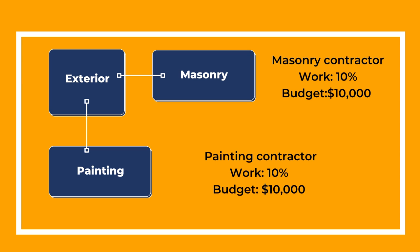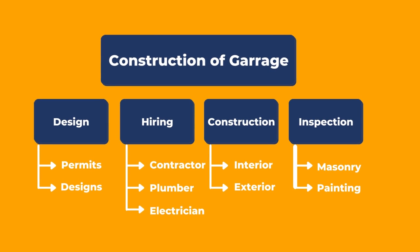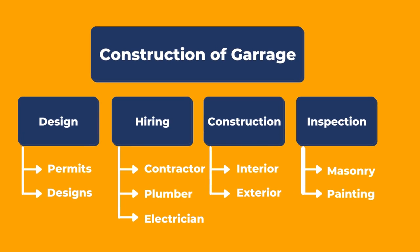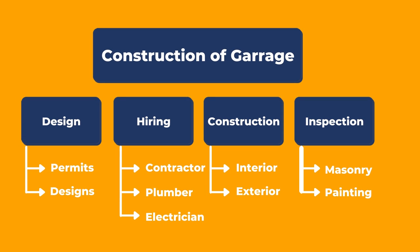This is all about deliverable-based WBS. Now we will start with phase-based WBS. Unlike the deliverable-based WBS, phase-based WBS is defined with phases. For constructing the garage, it has four major phases: Design, Hiring, Construction, and Inspection. Design phase consists of two tasks: Permits and Designs. Hiring phase includes hiring of housing contractor, plumber, and electrician. Construction phase includes the construction of interior and exterior. Inspection phase consists of masonry and painting works to make sure the garage is finished. In this phase-based WBS, we get an overview of tasks divided according to the phases.